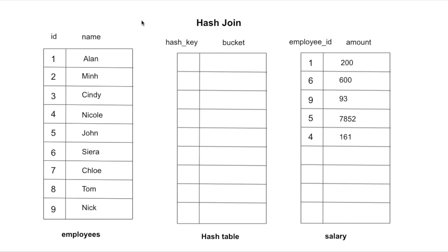Now let's look at the hash join algorithm. Hash join works totally differently because it requires a hash table to be built, which requires extra memory. When constructing the hash table, Postgres normally takes the smaller table — such as the salary table here — because taking a larger table would require a lot more memory, and the workspace can run out of memory.